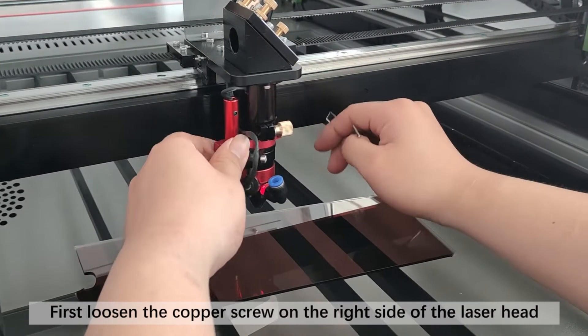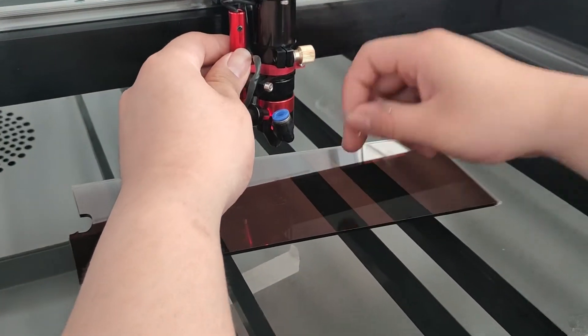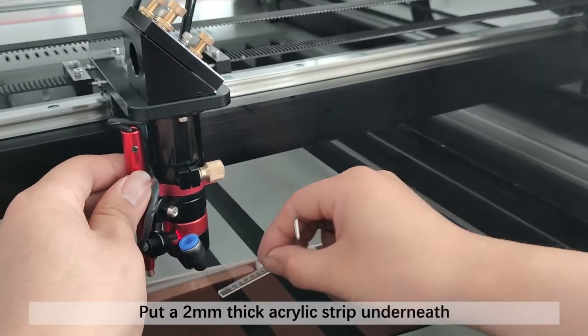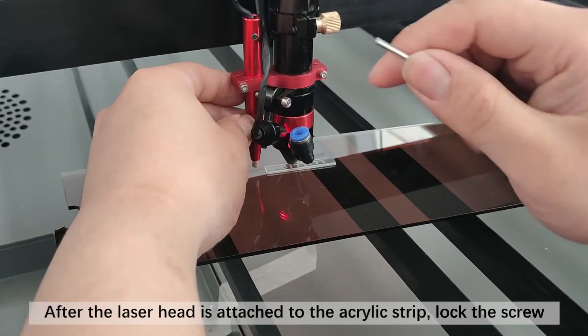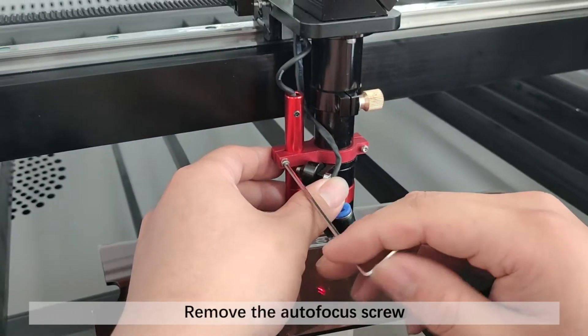First loosen the copper screw on the right side of the laser head. Put a 2mm thick acrylic strip underneath. After the laser head is attached to the acrylic strip, lock the screw. Remove the autofocus screw.